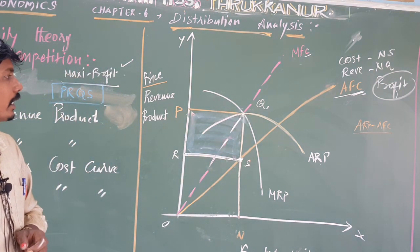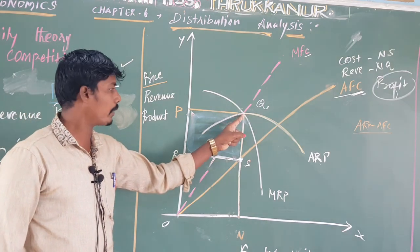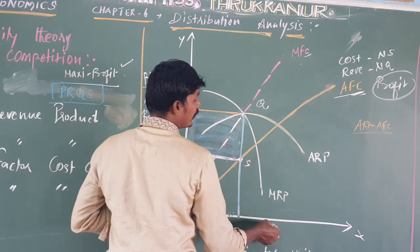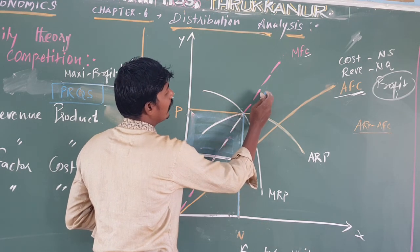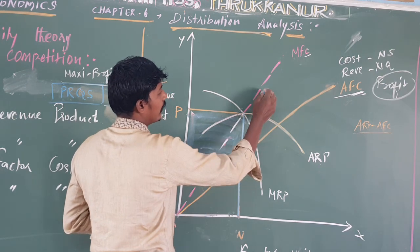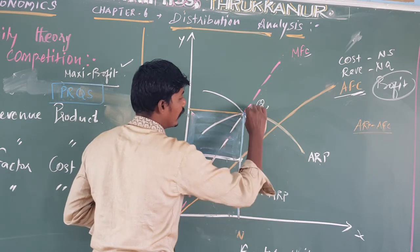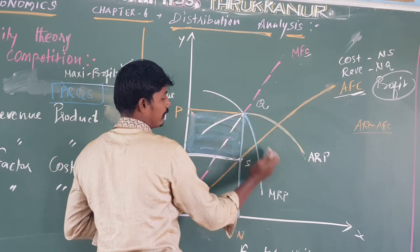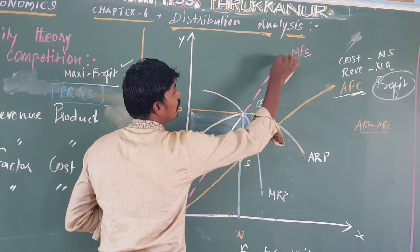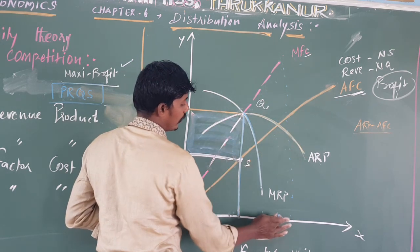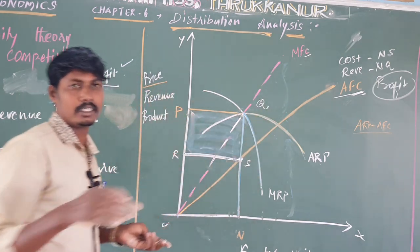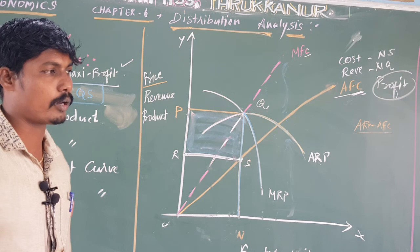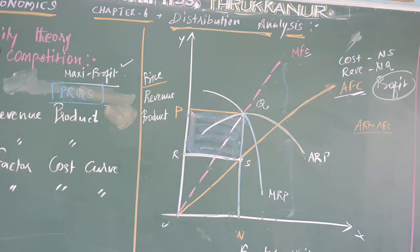Where MRP equals MFC, this is the equilibrium point. We can ask: why do we stop at this point? Because as long as MRP is greater than MFC, the firm gains more revenue than cost, so it keeps employing more factors. At the equilibrium where MRP equals MFC, there is no gain from employing additional units. This diagram is called marginal productivity theory under the imperfect competition condition.